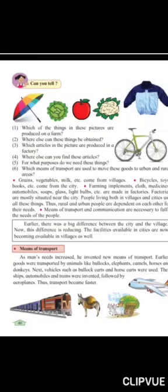They have shown you in pictures what modes of transport we can use. The first is a bullock cart — it is a road transport used in villages. Then they have given a boat, which is used on water. The trains are used on the rails. The bus runs on the road. An aeroplane flies in the sky. The truck runs again on the road.